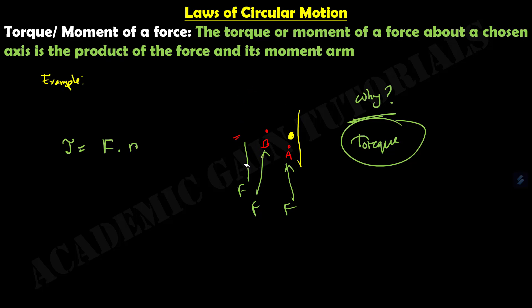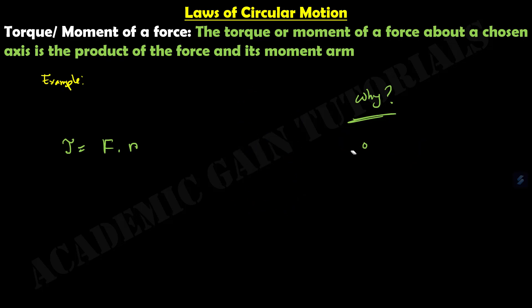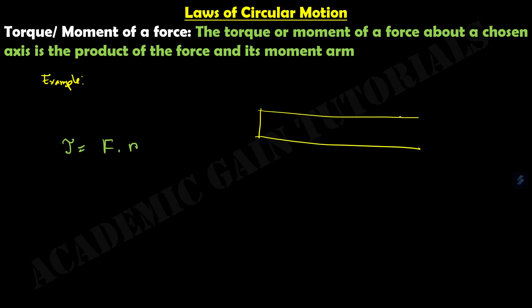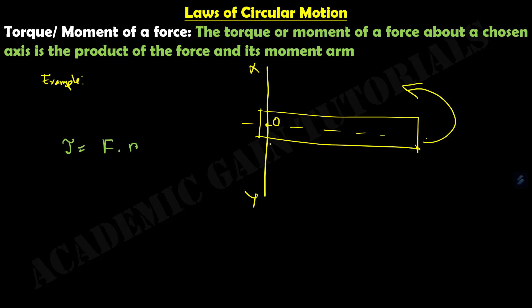Now let's understand torque more clearly. Suppose this is a wooden plank that rotates about an axis through point O — the X-O-Y axis. This whole wooden plank is rotating about that axis. One important point: if the line of action of the force is parallel to the plane, there is no rotation.